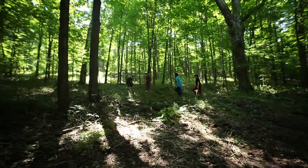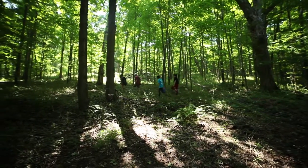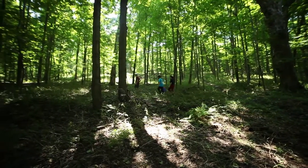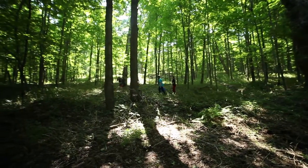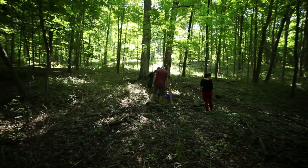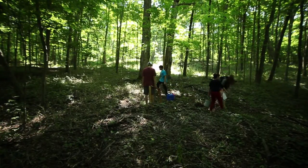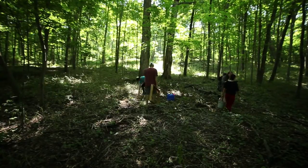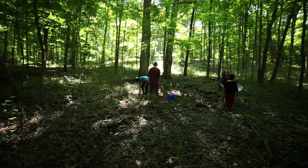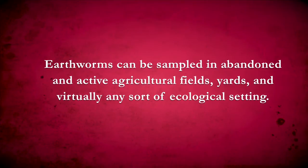The first step in any study of earthworms is to select a suitable sampling location. Because humans have a strong influence on dispersal and habitat suitability for earthworms, it is desirable to sample earthworms both near human land use influence, such as in a small urban woodlot, and in more remote areas. Earthworms can be sampled in abandoned and active agricultural fields, yards, and virtually any sort of ecological setting.